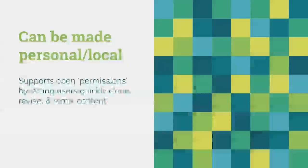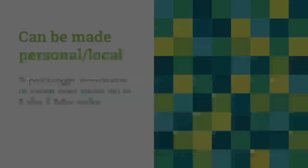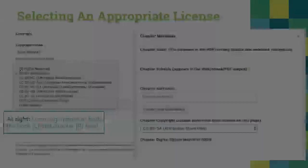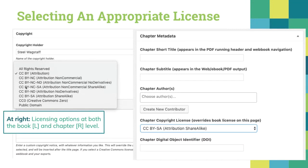The third principle is: does the platform let you make the content personal and local? Does the tool support those permissions — does it let you edit, remix, and redistribute? For us the answer is yes. We want to support all authors in choosing the appropriate license for their work. Many will want all rights reserved, but many will also want a more generous license, especially for educational purposes. At the book level you can indicate the copyright holder and chosen license, as well as indicate if it's in the public domain.